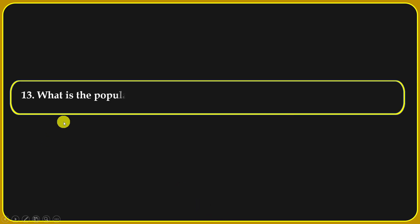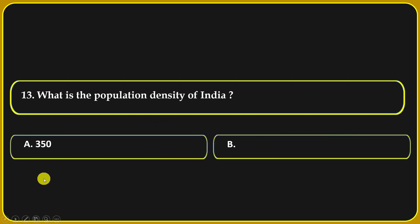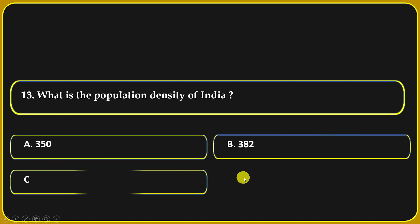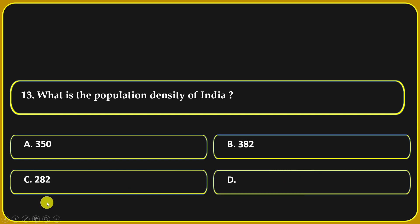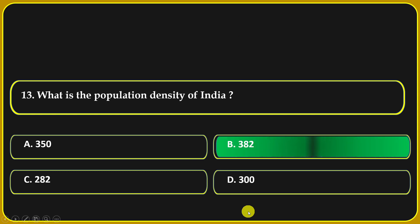What is the population density of India? Options: 350, 382, 282, or 300. 382 is the correct answer.